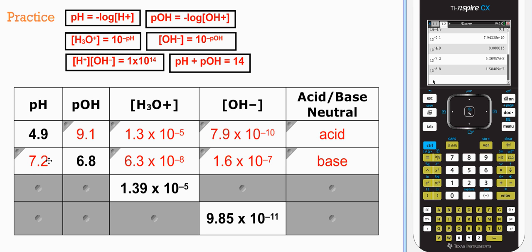7.000 is neutral, 6.9 acidic, 7.01 basic. It's right on that line that's neutral.